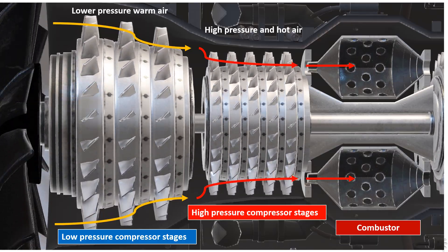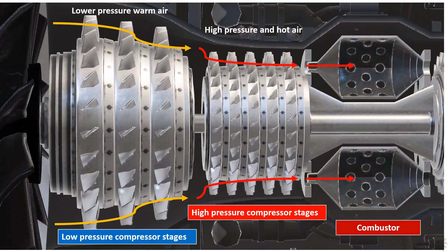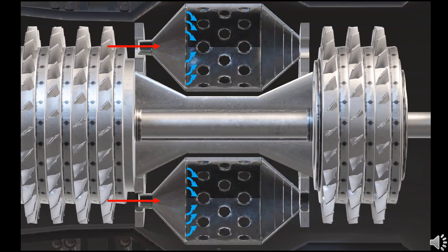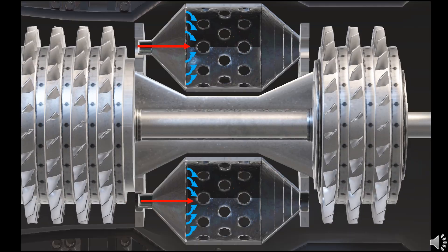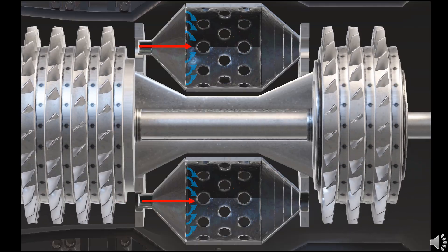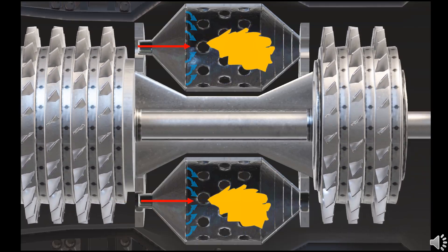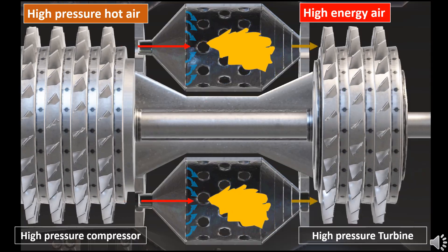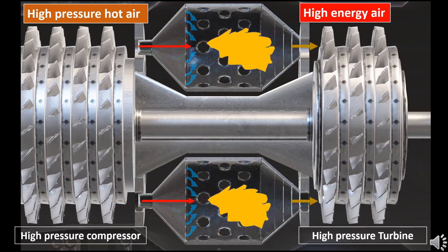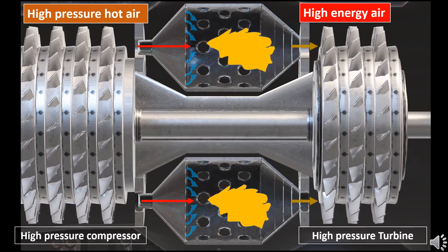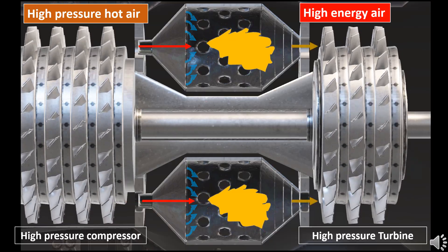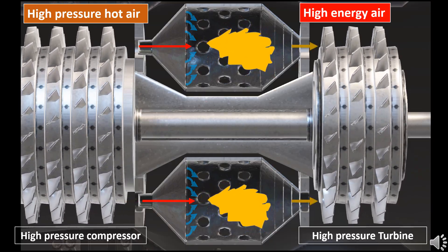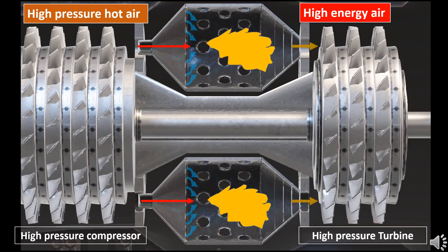This high pressure air from the compressor enters the combustion chamber. In the combustion chamber, aviation fuel is injected and mixes with the high pressure air. Igniters present around the combustion chamber produce a spark and ignite the air and fuel mixture. This burning of the fuel produces an enormous amount of heat.